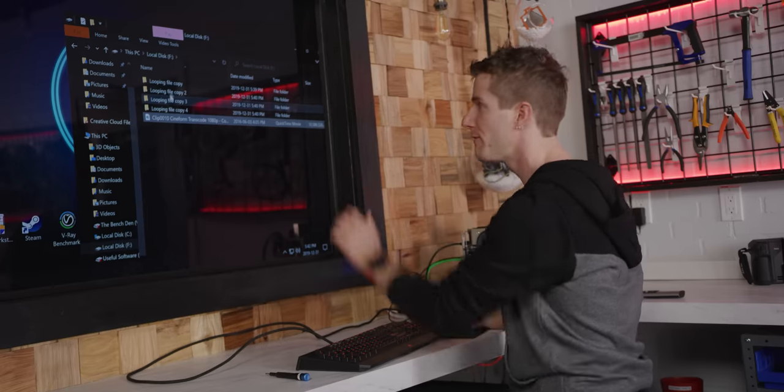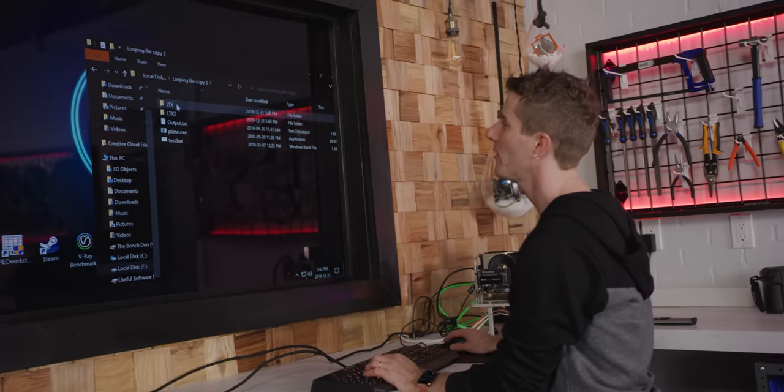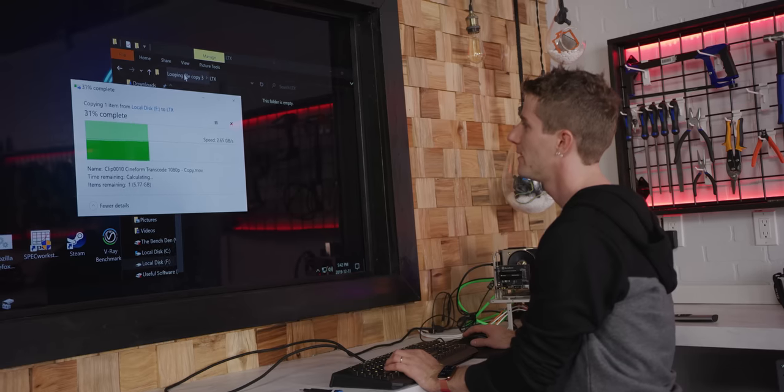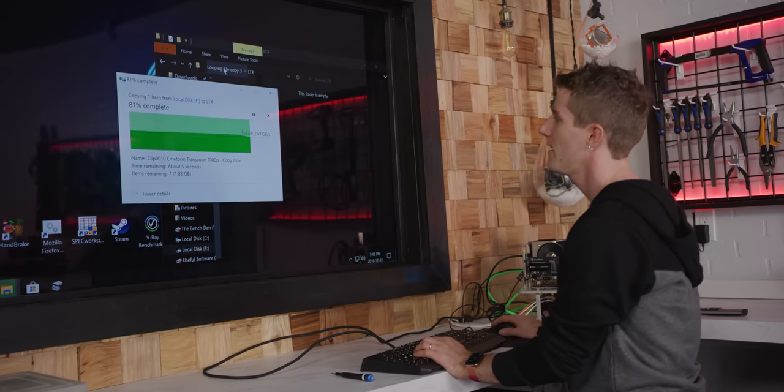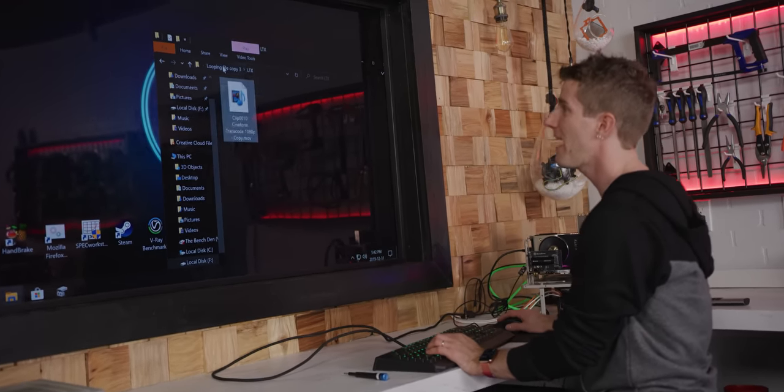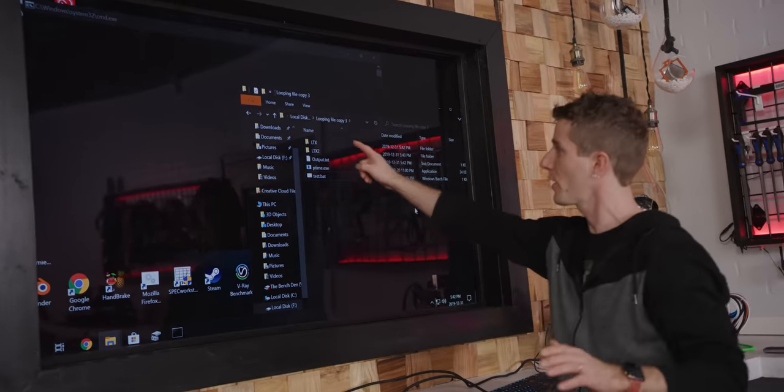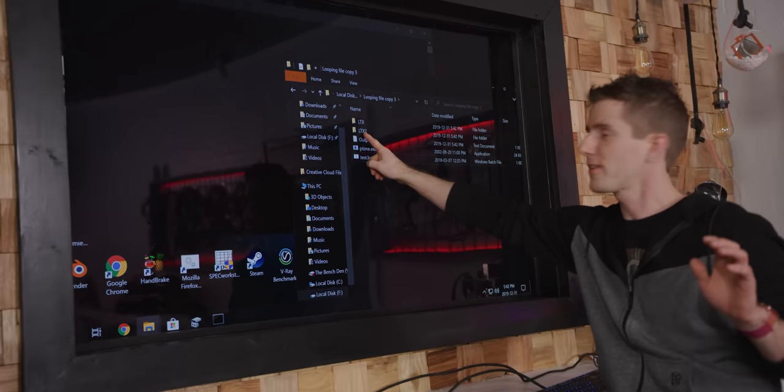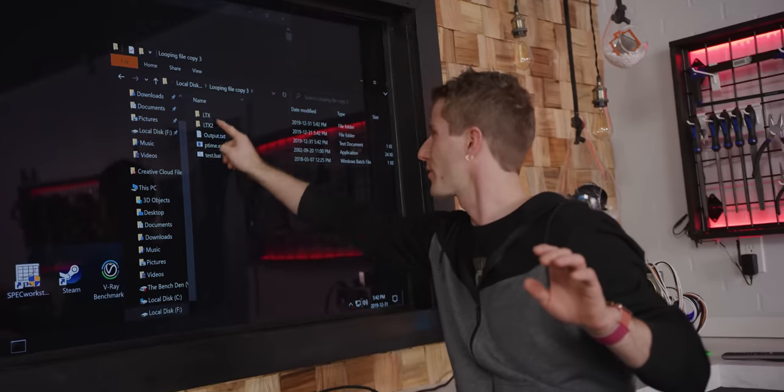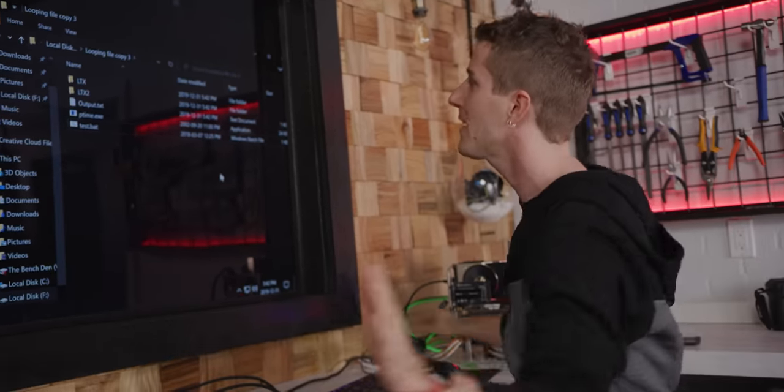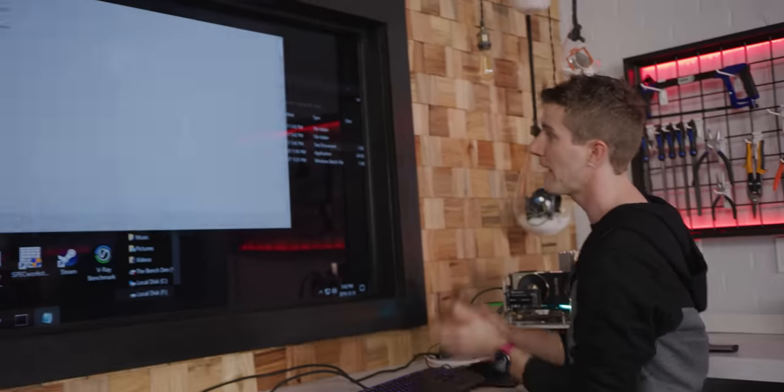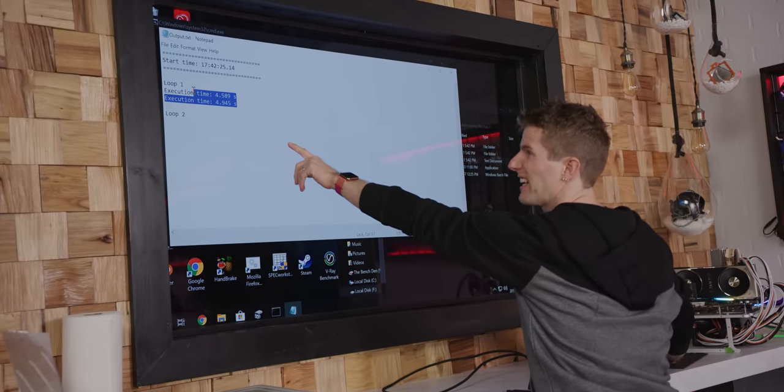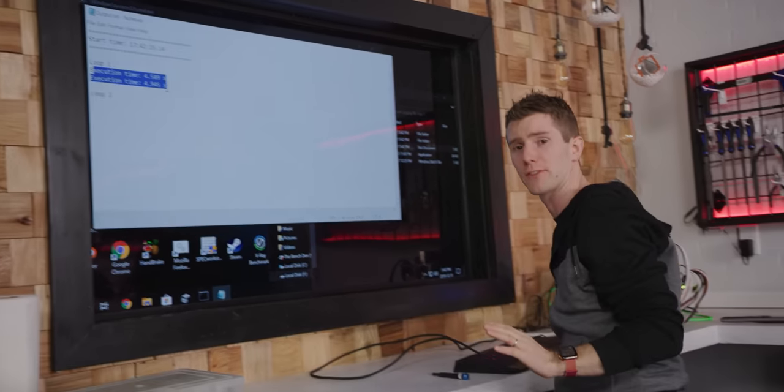We've got four instances of our looping file copy test, and what's going to happen is that once we run the batch file with our 10 gig file in there, it is going to constantly copy the contents of LTX into LTX2, and when it's done doing that, it's going to copy it back, and then it's going to copy over that, copy over that, and keep going ad nauseum, throwing the results in output.txt.